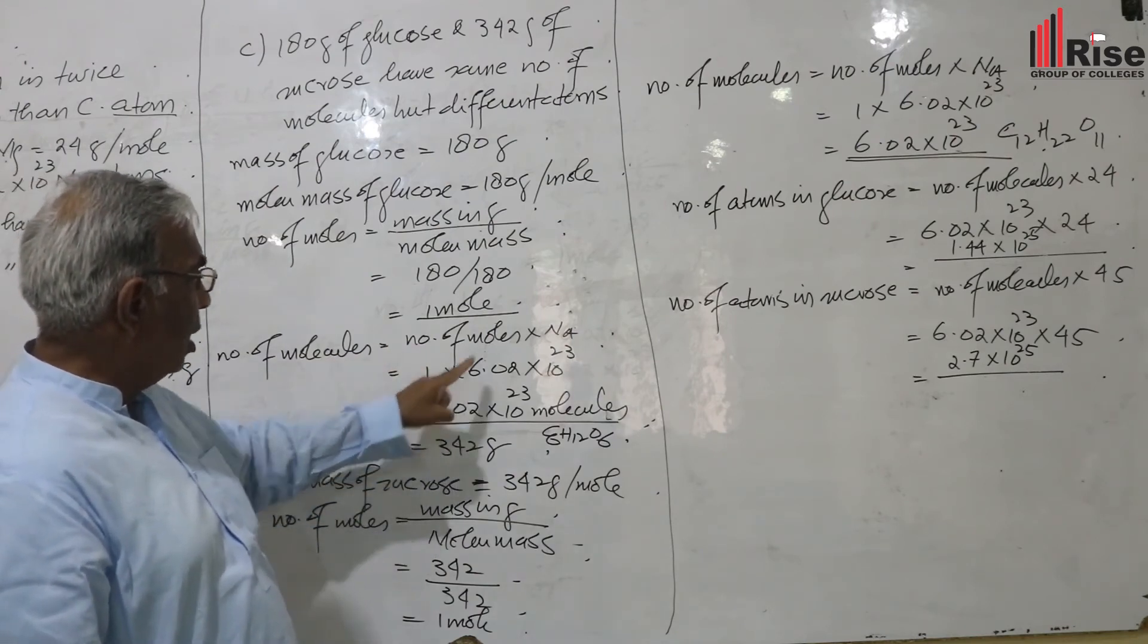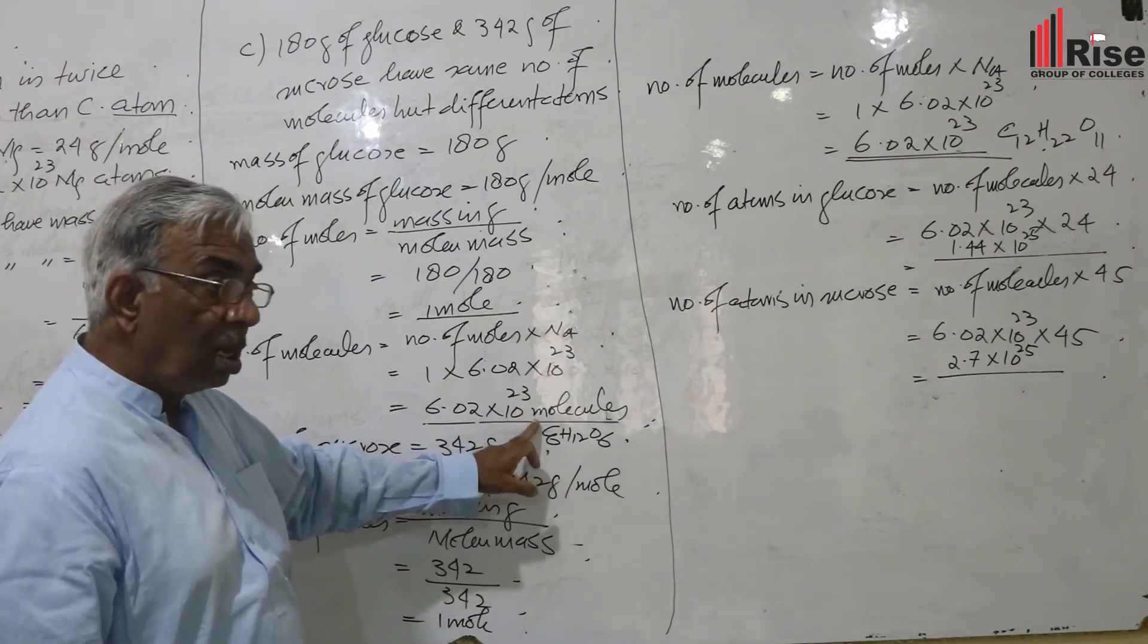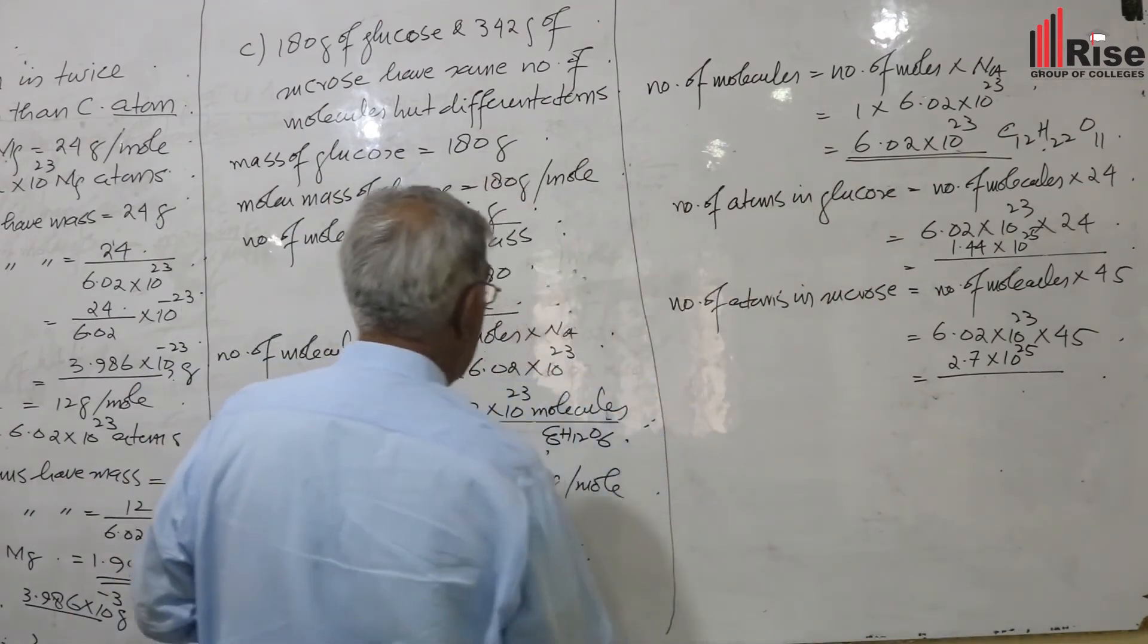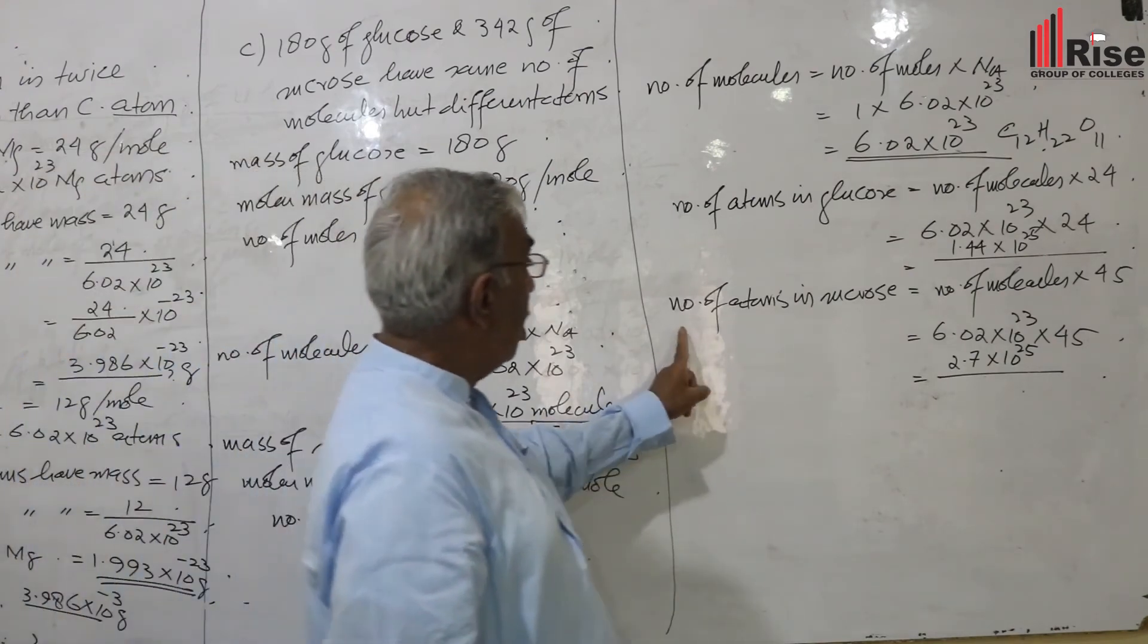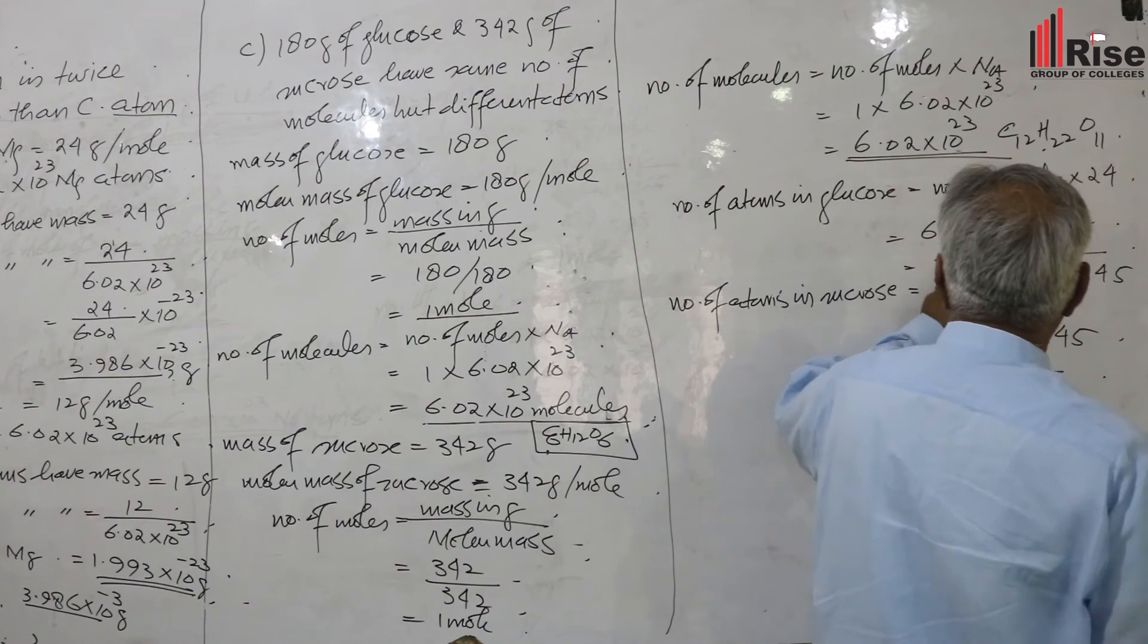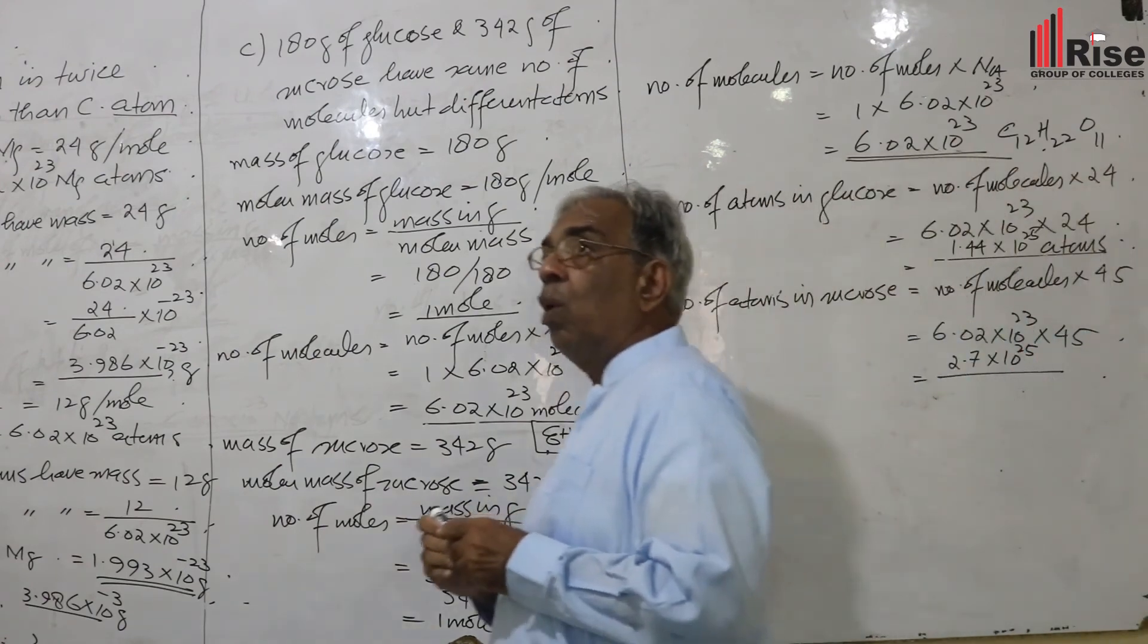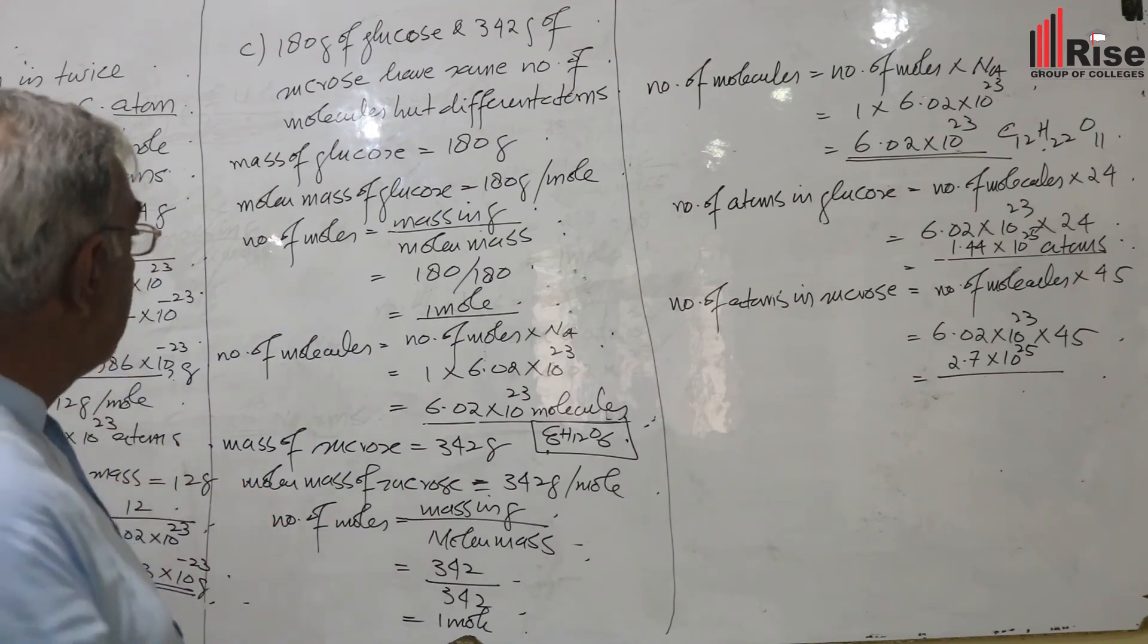Number of molecules equals number of moles multiplied by Avogadro's number: 6.02 into 10 to the power 23 molecules. One mole glucose contains 24 atoms per molecule. Number of atoms in glucose equals number of molecules multiplied by 24.